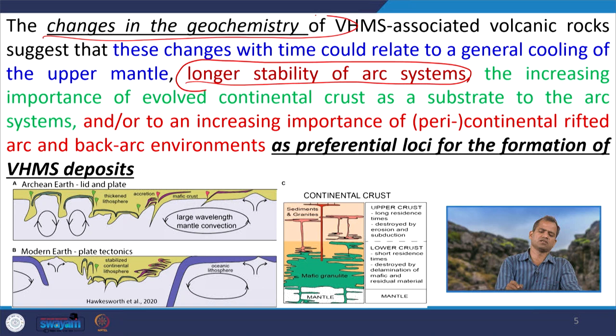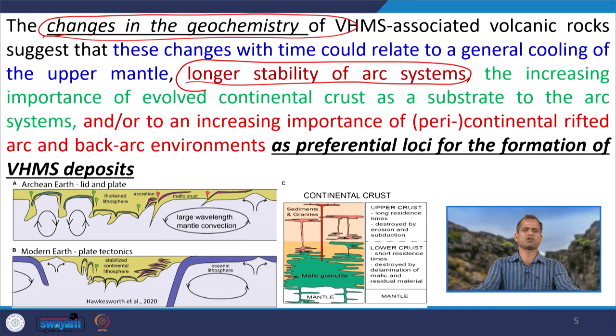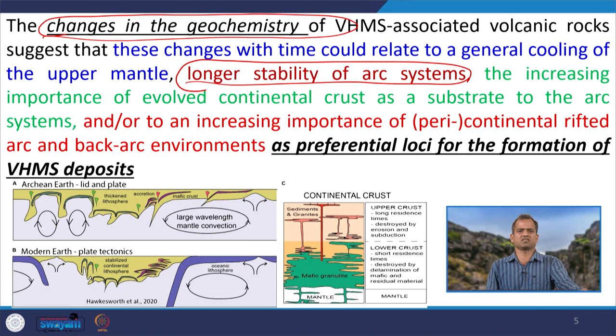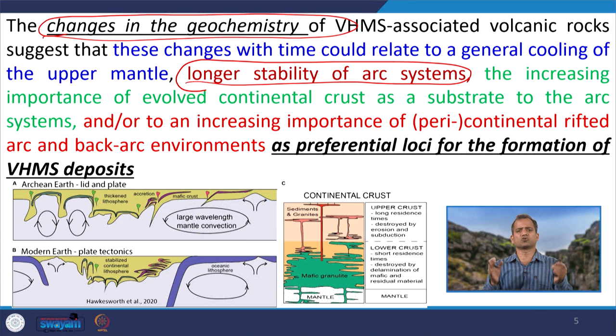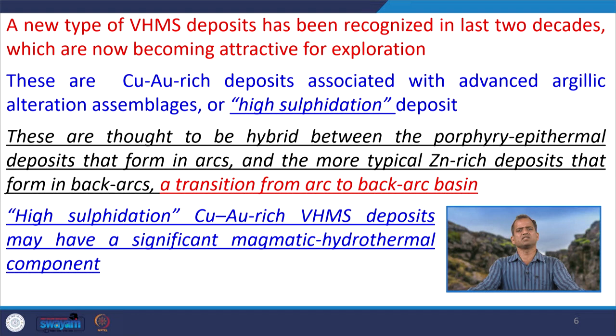The tectonic regime shifted from a juvenile system to a stable continental system. This is indicated by the geochemistry of the VHMS deposit. If you compare the geochemistry of Archean VHMS with modern or younger stratigraphic VHMS, you will find a drastic change — due to the change in tectonic setting, pressure-temperature regime, style of mineralization, and composition of the host rock.